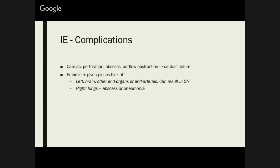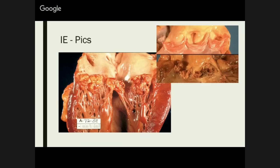Previously damaged valves — like rheumatic heart disease and artificial valves — your most common valve affected is your mitral valve and strep viridans is your most common pathogen. These are the two to keep in mind because of the buzzwords. Complications: perforation, abscess formation, and outflow obstruction — if your valve is so heavily colonised, you're not going to be able to get blood out of your heart. It can also result in embolism, which results in your splinter haemorrhages. If it's off the left side, you can result in emboli in your brain, other end organs, or a GN (glomerulonephritis). On the right side, it'll go straight into your lungs, resulting in an abscess or pneumonia.